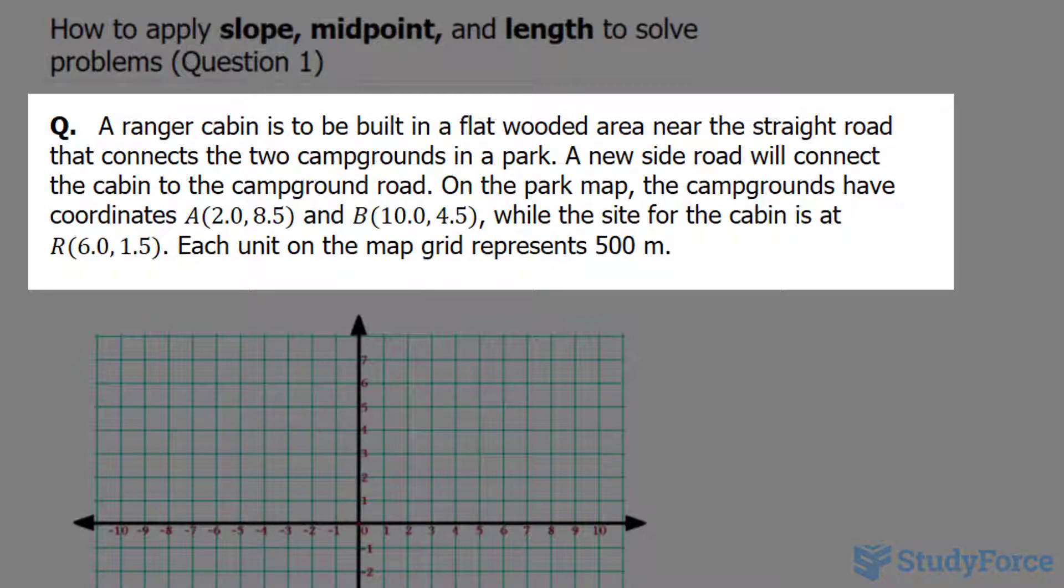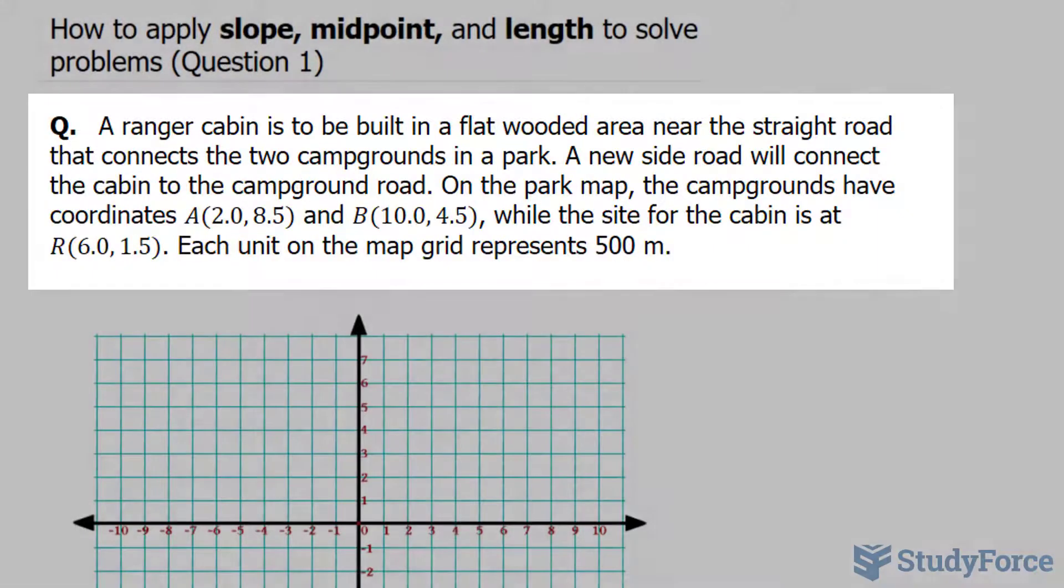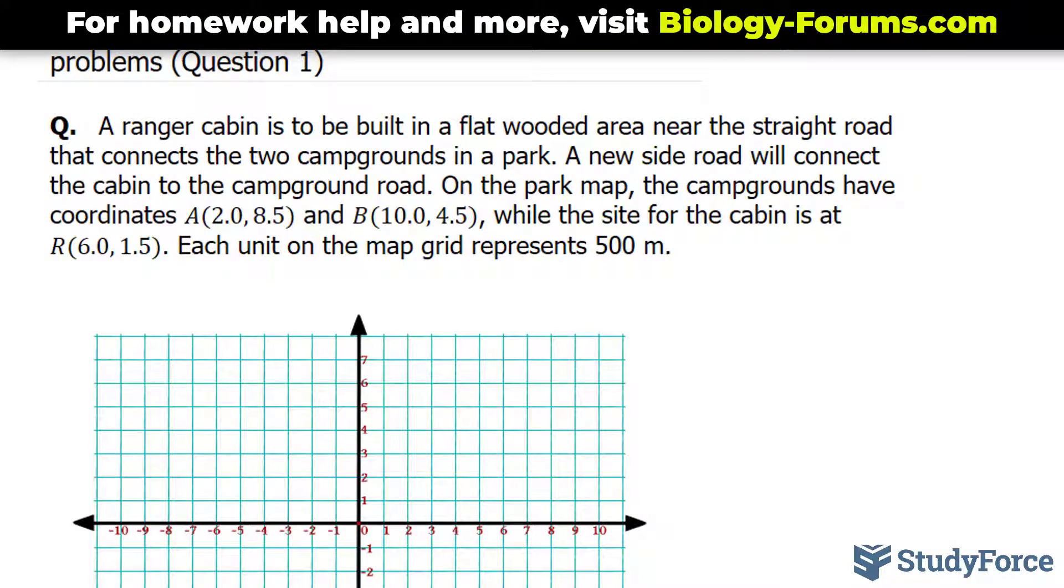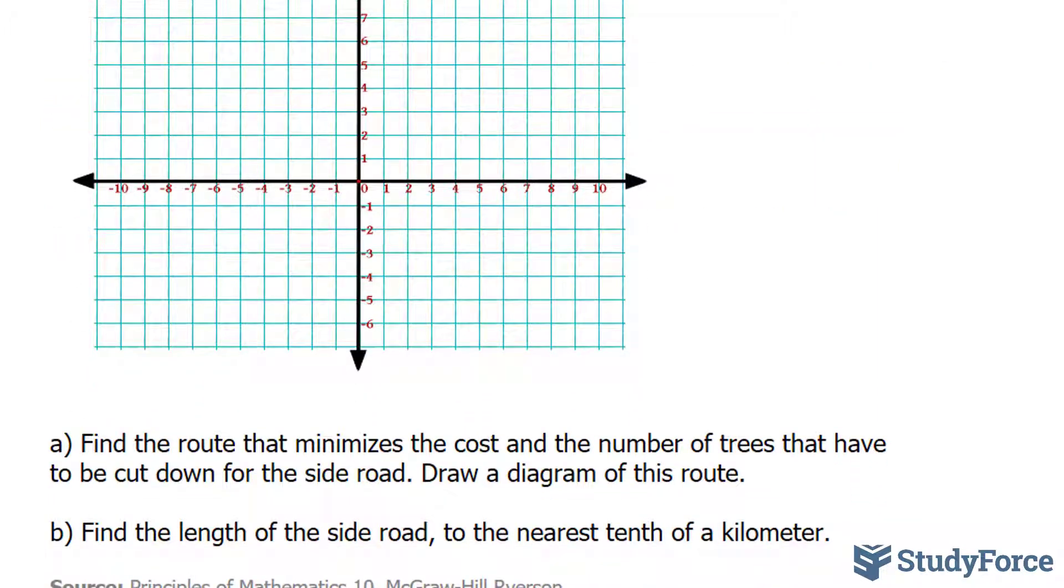On the park map, the campgrounds have the coordinates A and B, while the site for the cabin is at point R, and the coordinates for each of those points are written. Each unit on the map grid represents 500 meters. The question asks us to find the route that minimizes the cost and the number of trees that have to be cut down for the side road, draw a diagram for this route, and find the length of the side road to the nearest tenth of a kilometer.